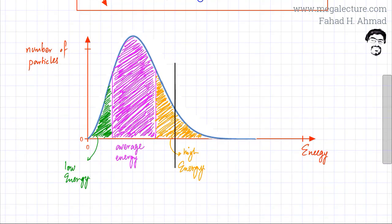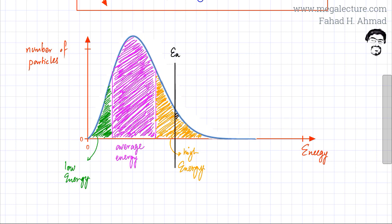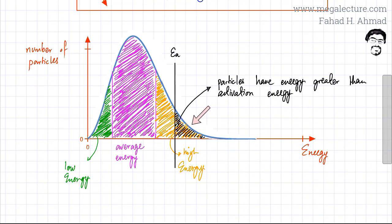Another important label added to the Boltzmann distribution is the activation energy line, EA. This line marks the activation energy — the minimum energy needed for a reaction to start. Particles having energy greater than the activation energy are represented by the shaded part to the right of this line. These are the particles that would successfully collide and take part in the reaction.